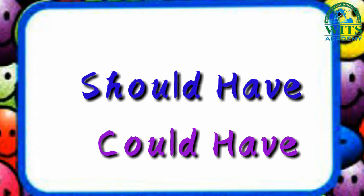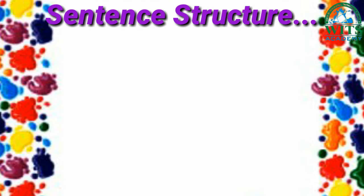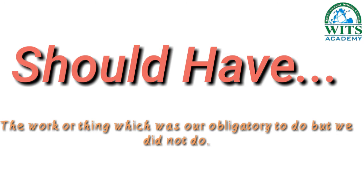Let's start the video. The use of 'should have': sentence structure is subject plus should have plus verb third form plus object. The verb or action which was obligatory to do but we did not do is called 'should have.'